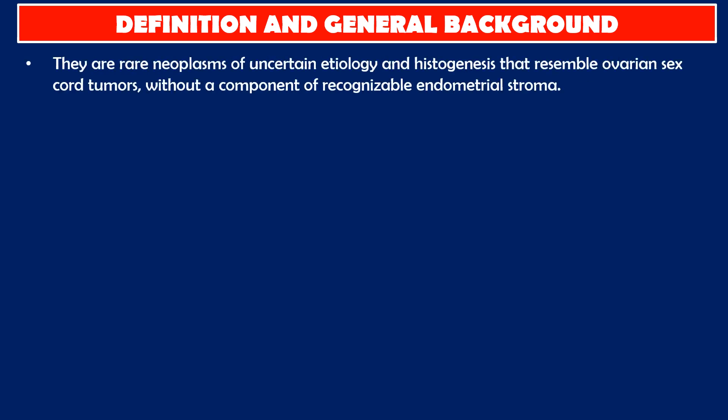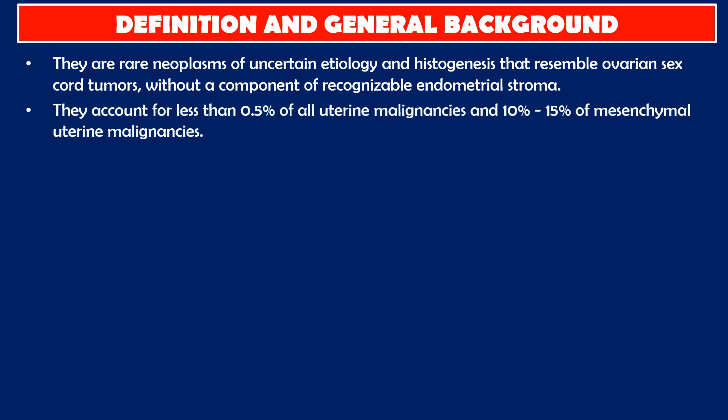Definition and general background. They are rare neoplasms of uncertain etiology and histogenesis that resemble ovarian sex cord tumors without a component of recognizable endometrial stroma. They account for less than 0.5% of all uterine malignancies and 10% to 15% of mesenchymal uterine malignancies.